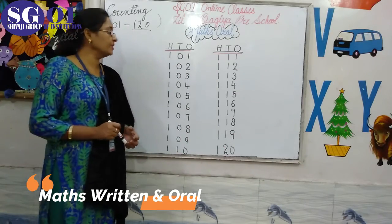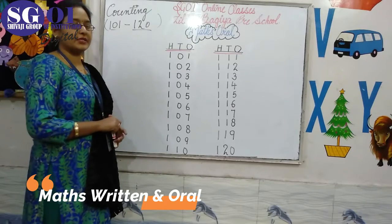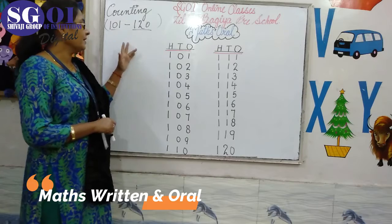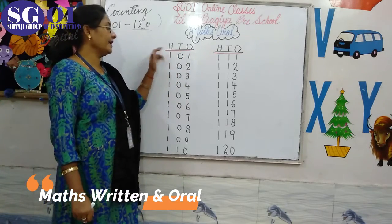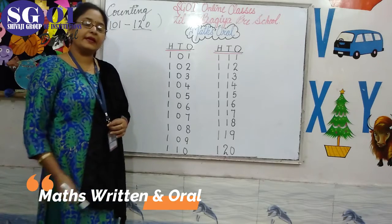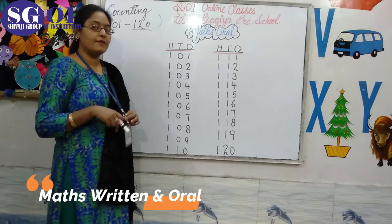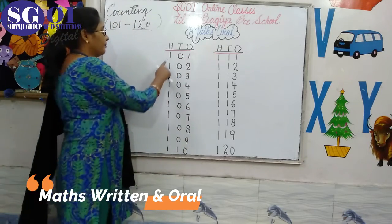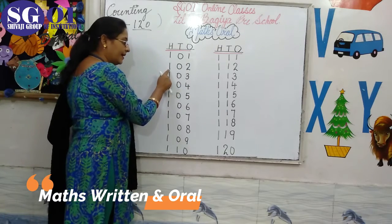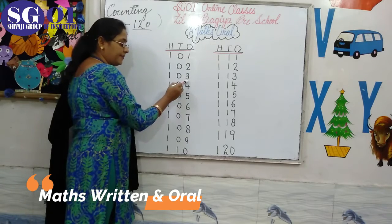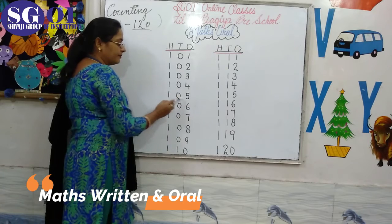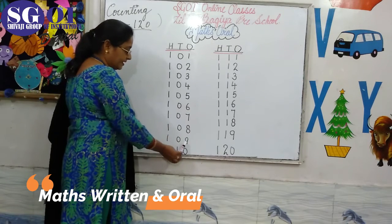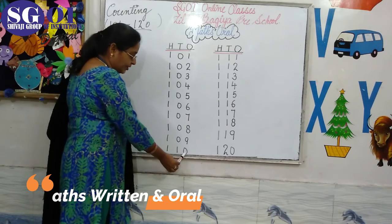Hello kids, welcome to the next class, that is Math Oral. Today we will learn counting from 101 to 120. O for ones, T for tens, and H for hundreds. We already learned counting from one to hundred, and now we will learn from one hundred. Let's start: one hundred one, one hundred two, one hundred three, one hundred four, one hundred five, one hundred six, one hundred seven, one hundred eight, one hundred nine, one hundred ten.